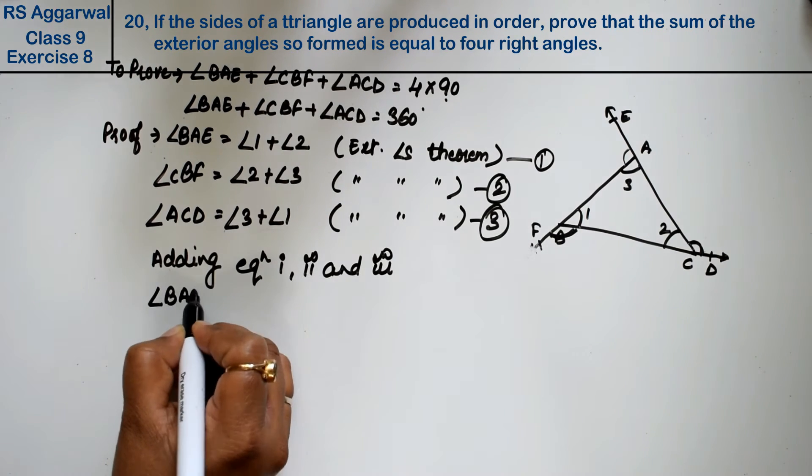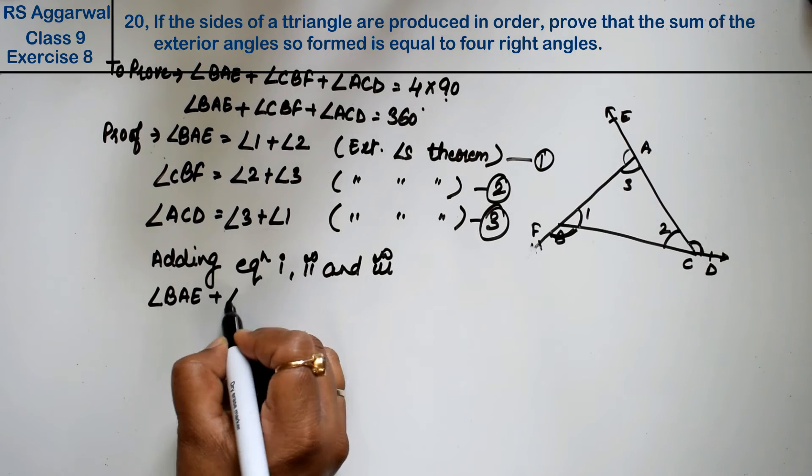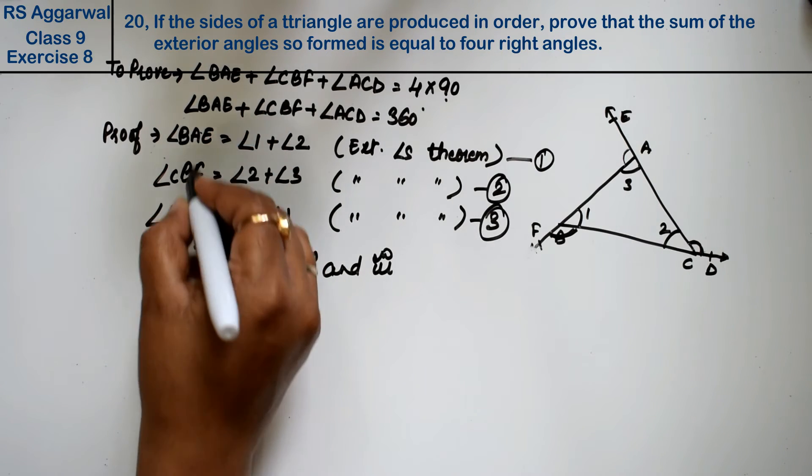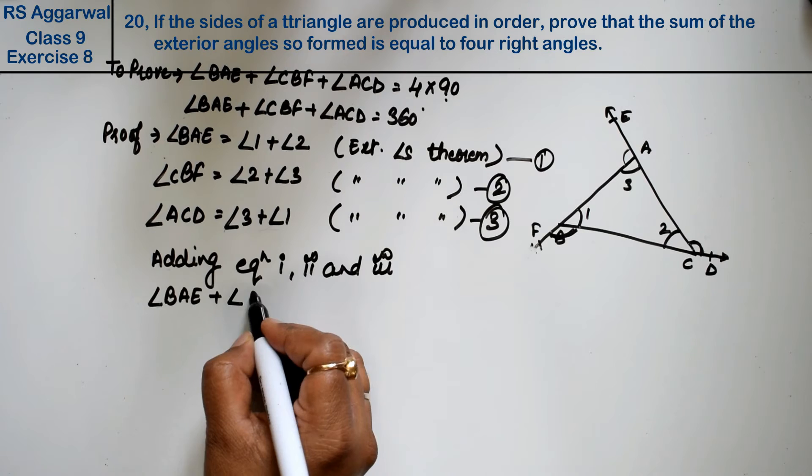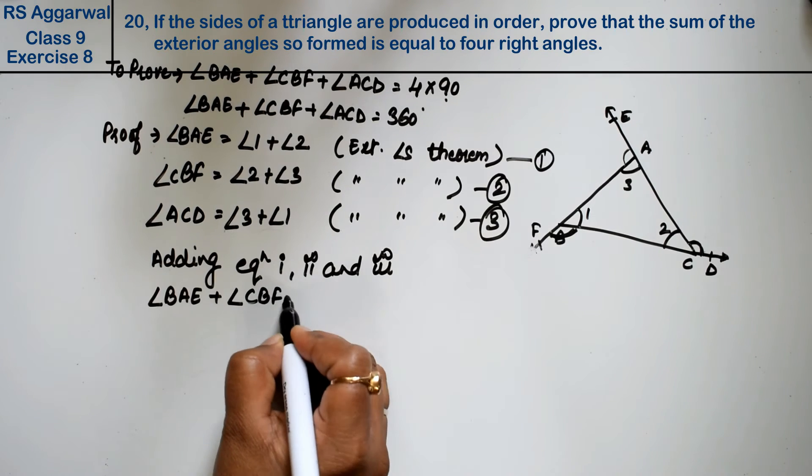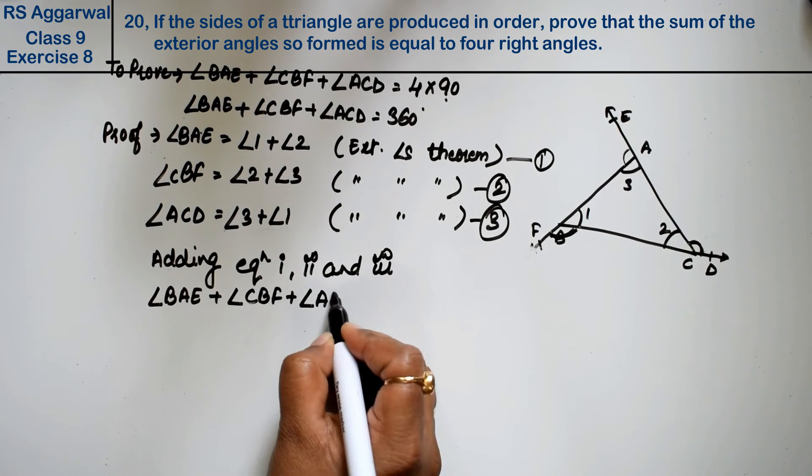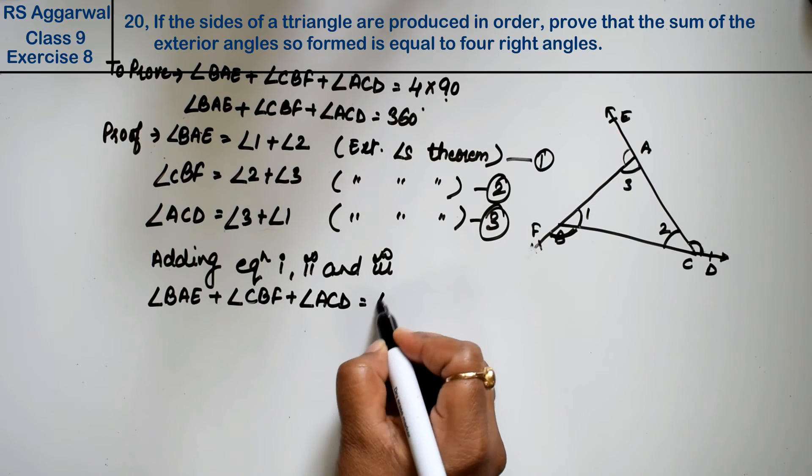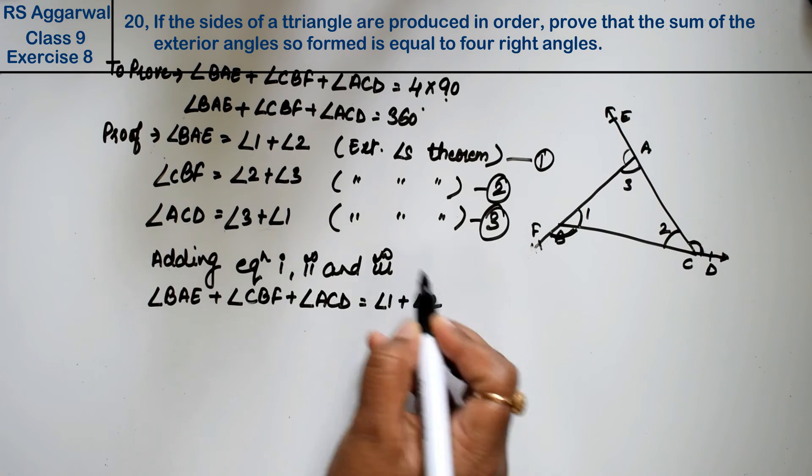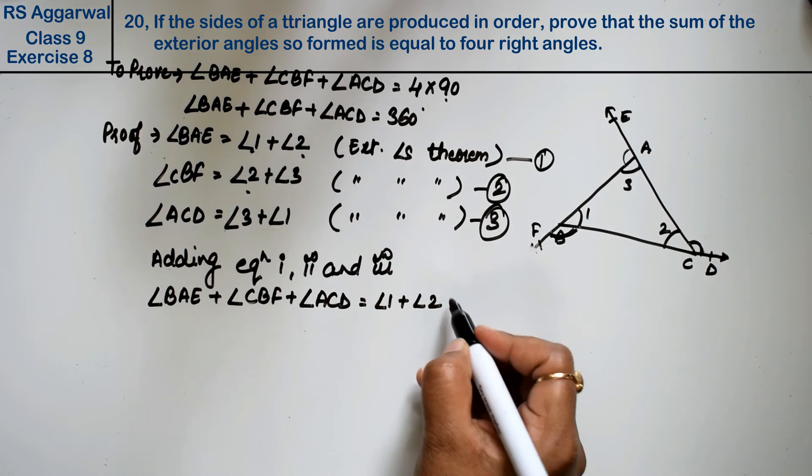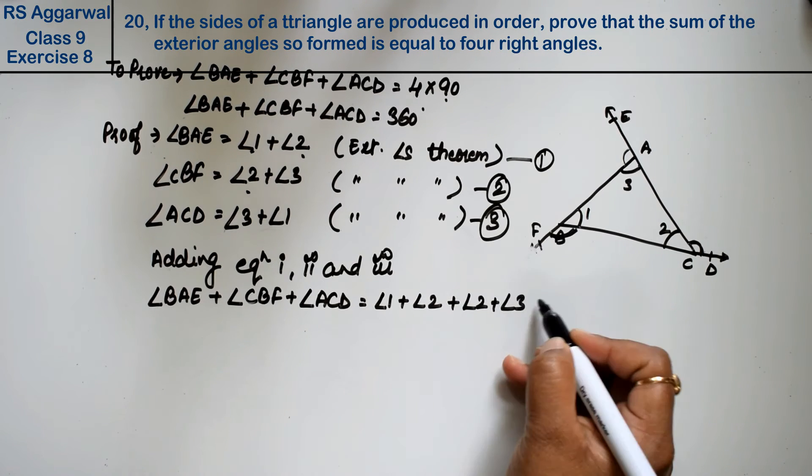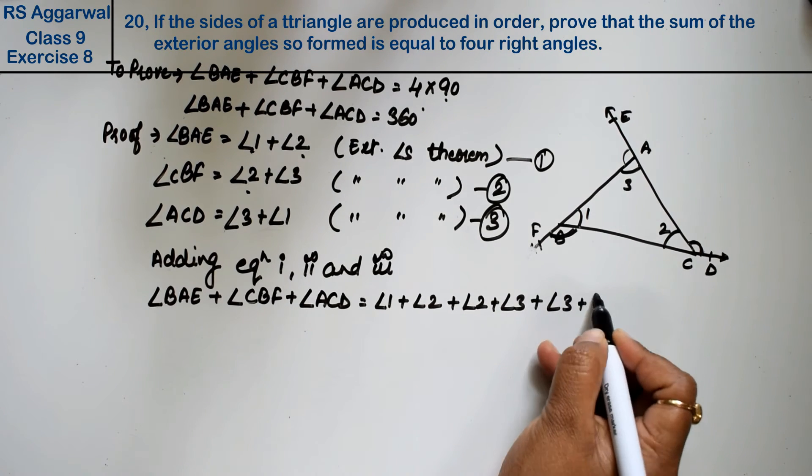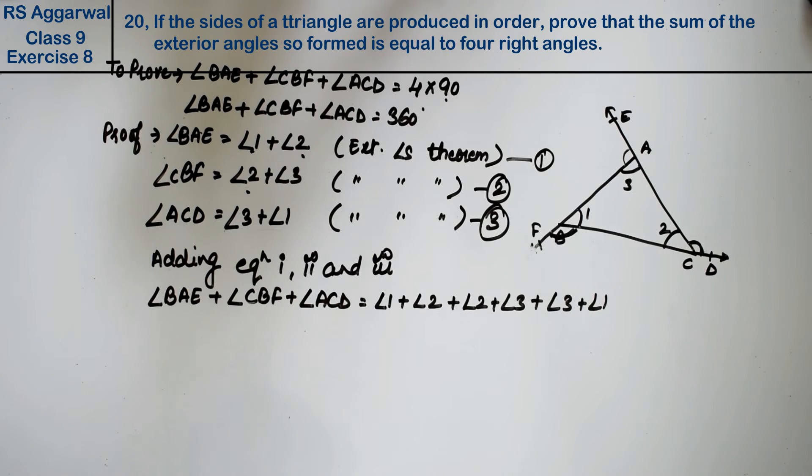Angle BAE plus angle CBF plus angle ACD equals angle 1 plus angle 2, plus angle 2 plus angle 3, plus angle 3 plus angle 1.